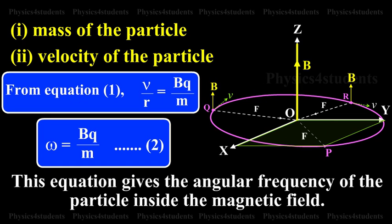From equation 1, V by R is equal to BQ by M. Omega is equal to BQ by M. This is equation number 2. This equation gives the angular frequency of the particle inside the magnetic field.